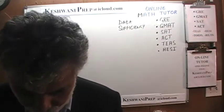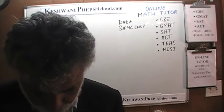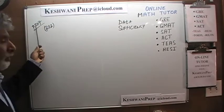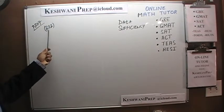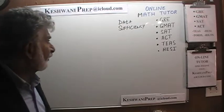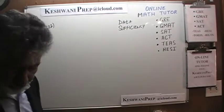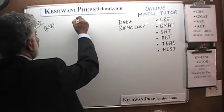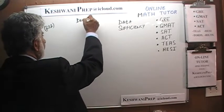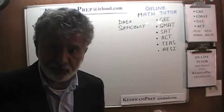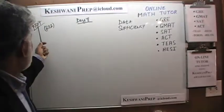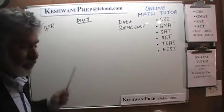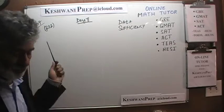Today we will do some data sufficiency problems that you will find on page number 207. But before we do the problems on page 207, there was one last problem on page 206 from two days ago. Yesterday we did a multiple choice problem on day number seven. Today is our day number eight. On day number six we did the data sufficiency problems on page 206 and inadvertently left out the very last problem, which is number 282 on page 206. We will do that one first.